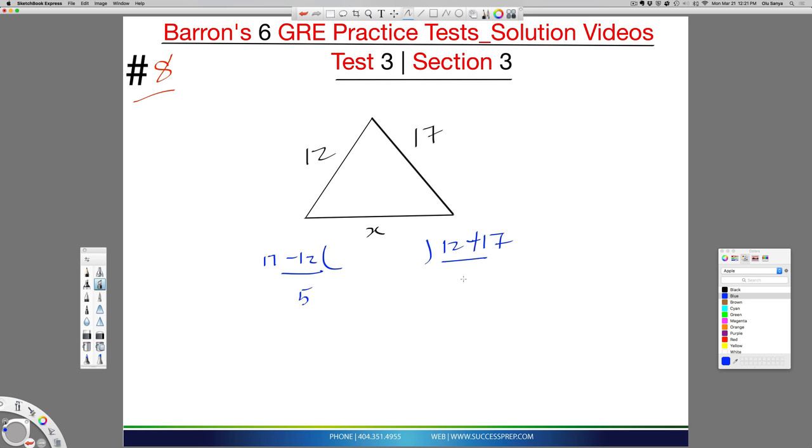So this is 5 and this is 29. These represent the outer boundaries of what the third side could possibly be. The third side could be 6, 7, 8, all the way to 28.